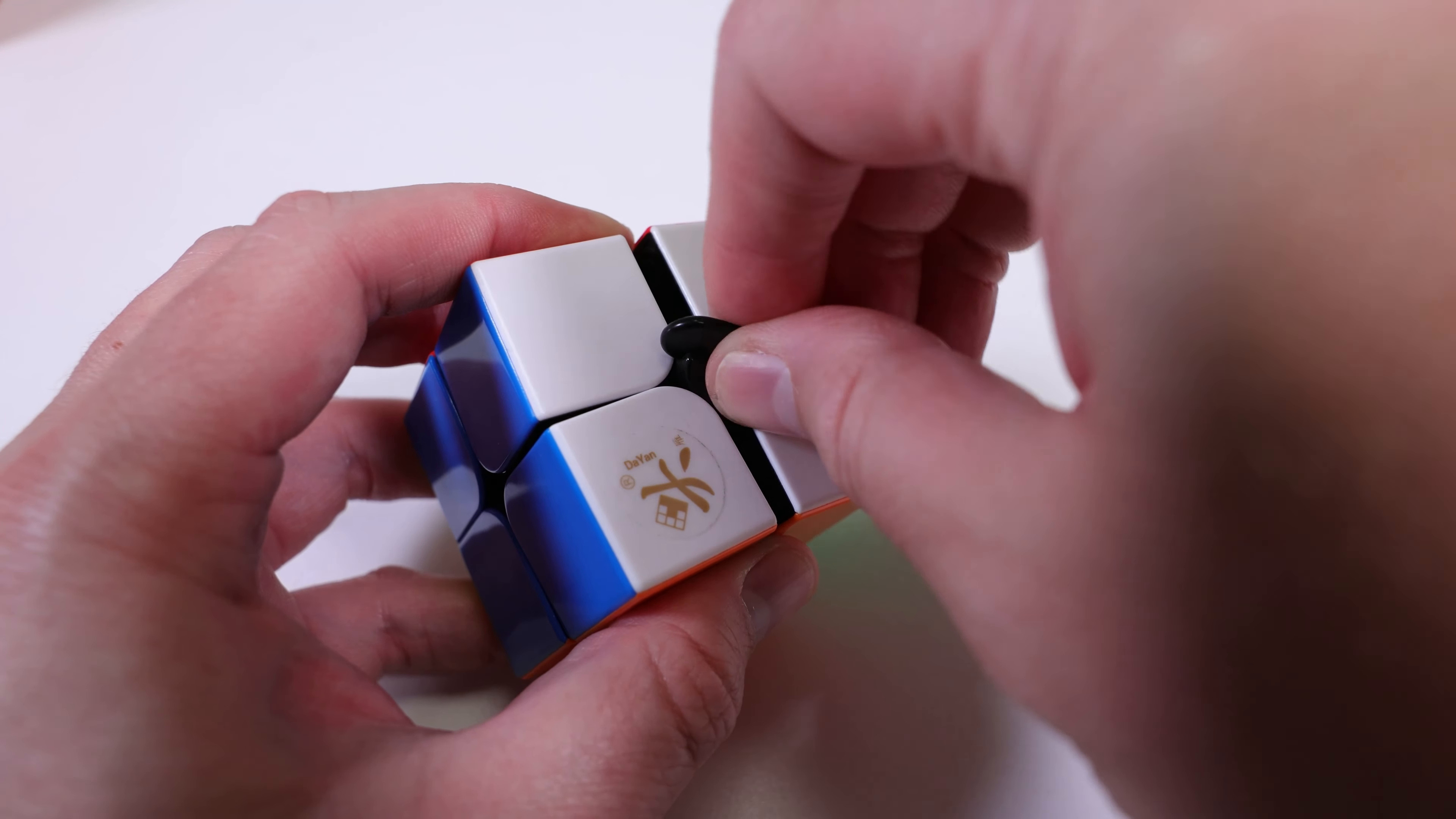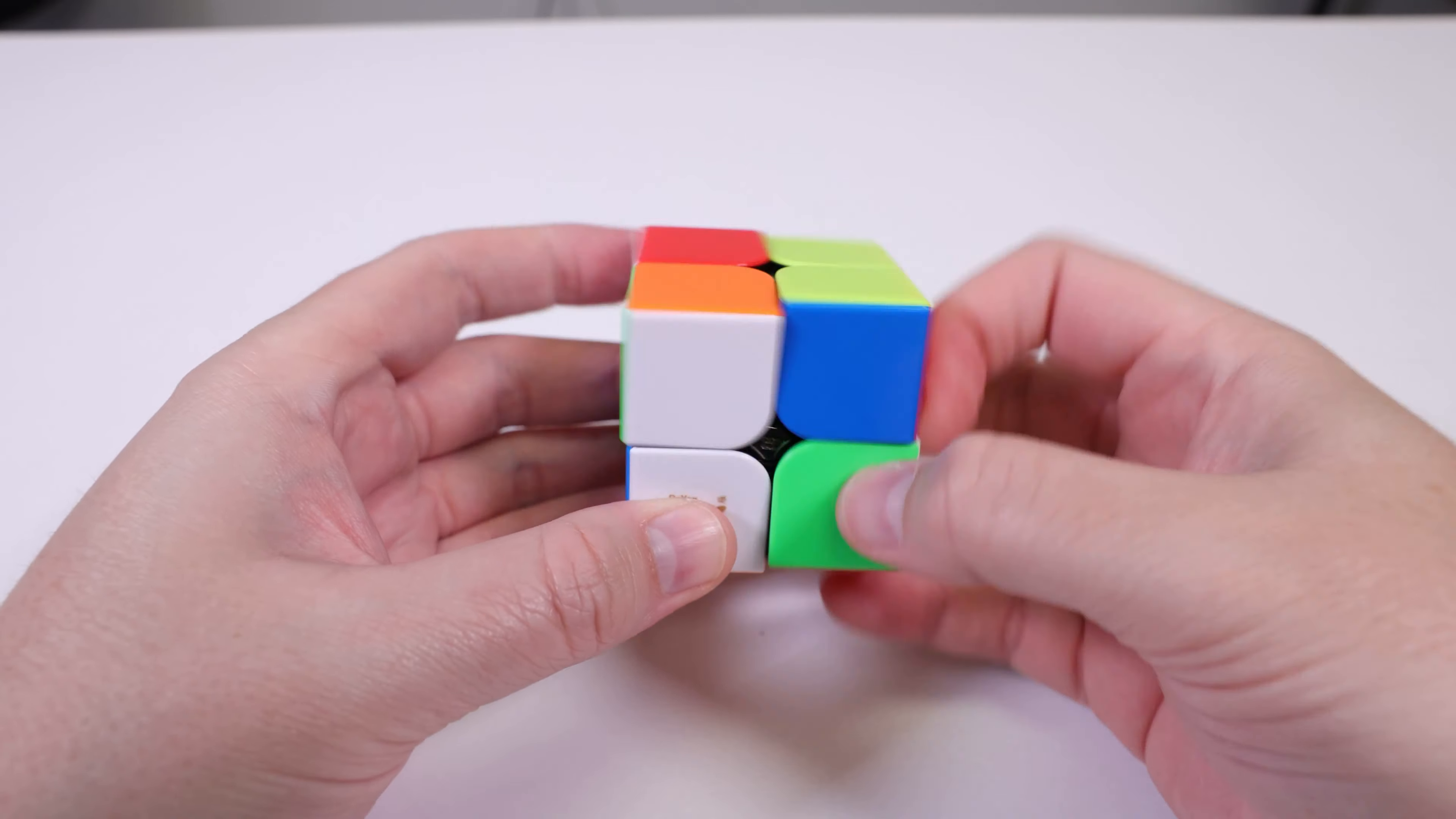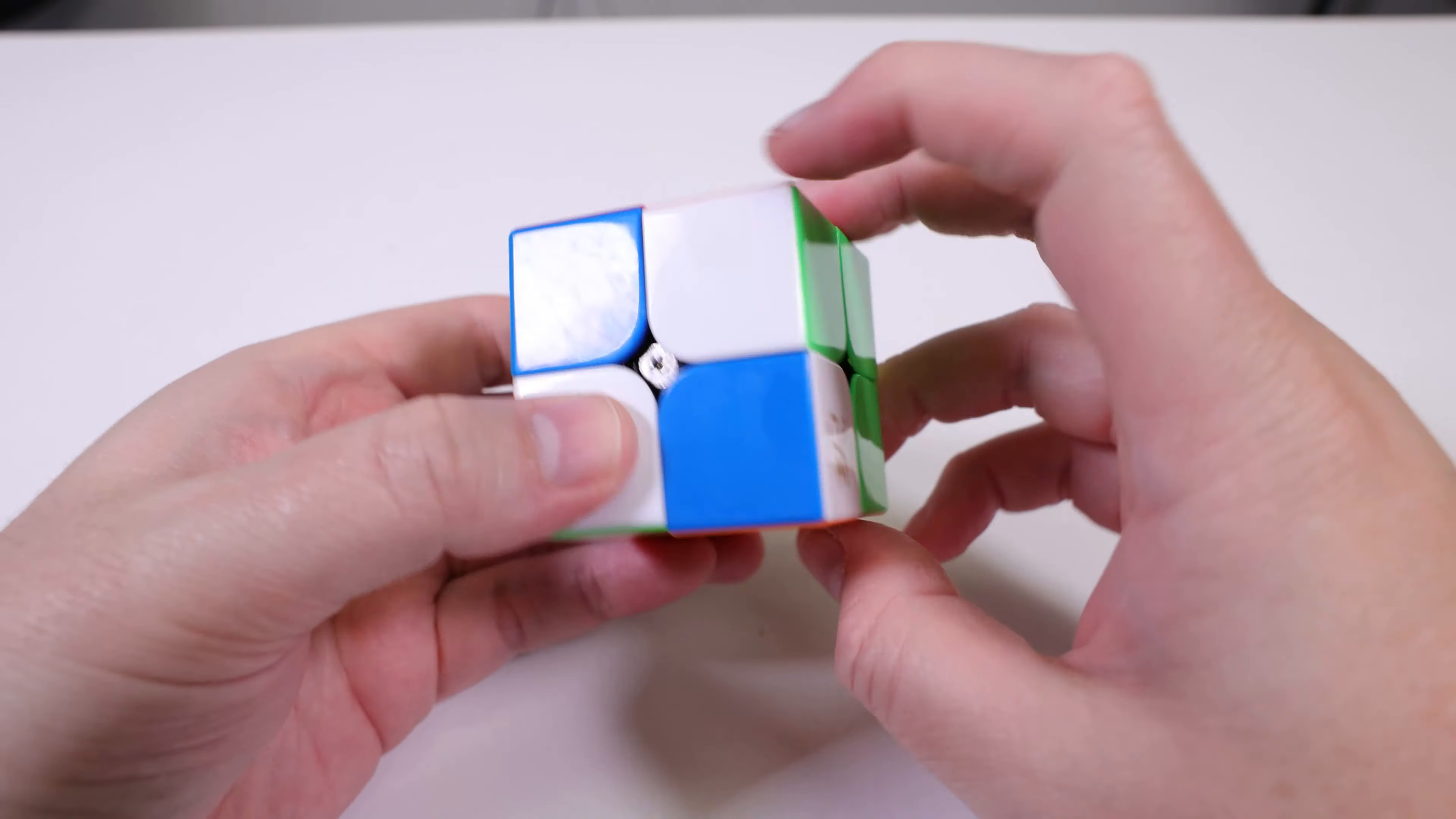1 is the strongest magnet setting while 3 is the weakest. This cube is on setting number 2, which we feel adds the perfect amount of stability and control.